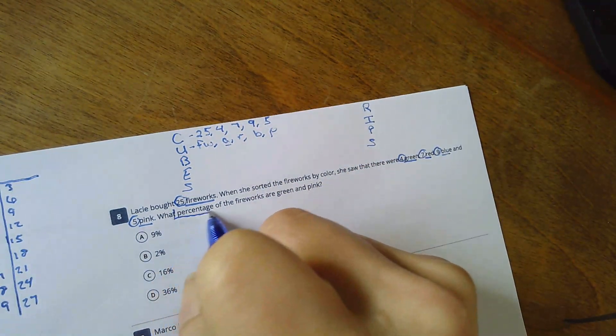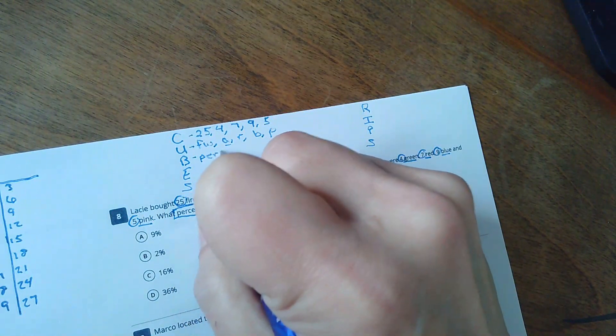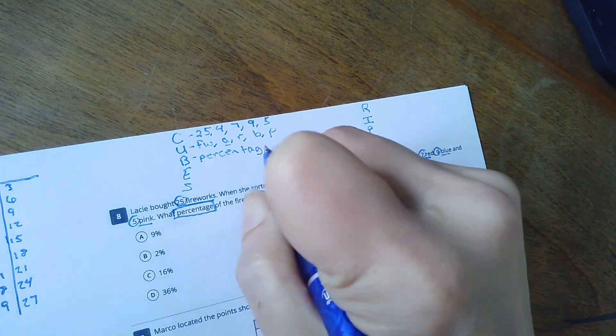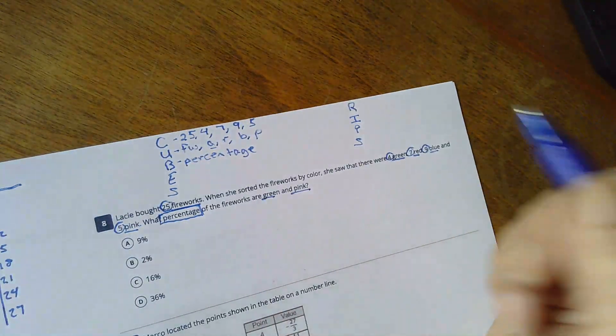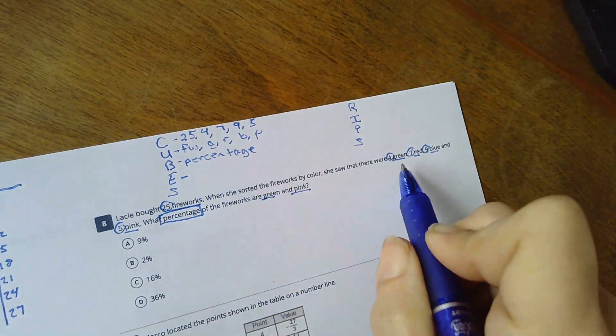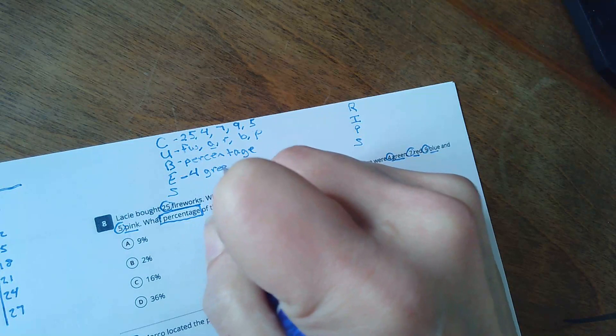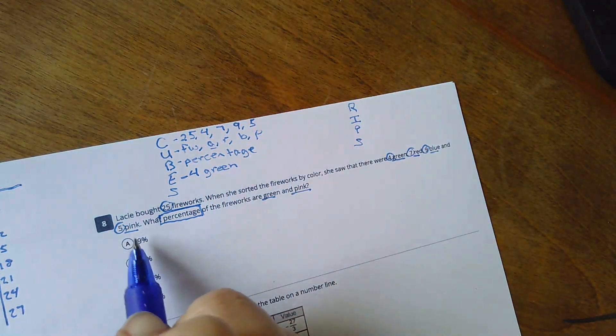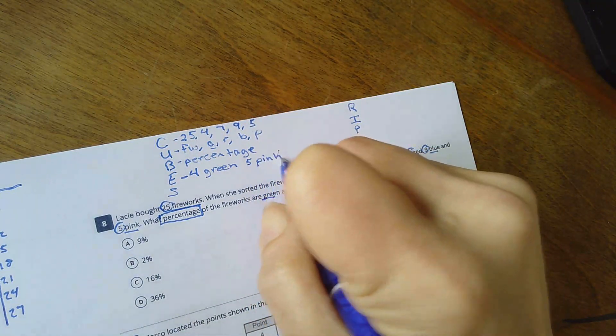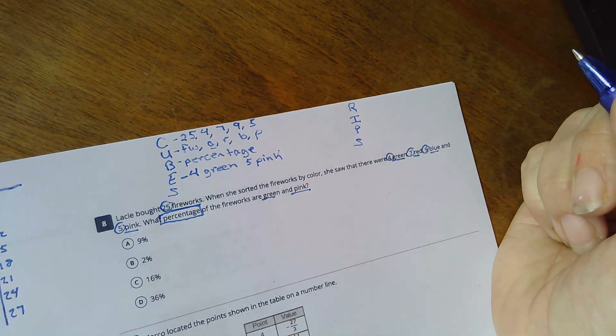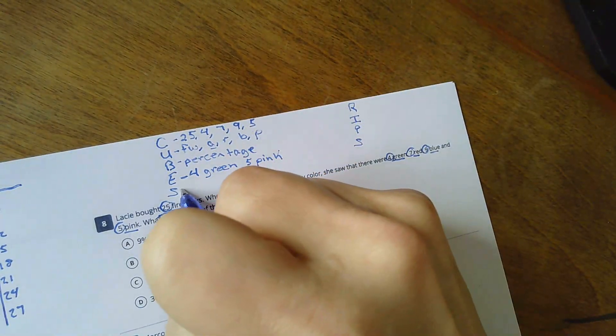Percentage. And this is when I'm going to evaluate. I need green and pink. Okay. So green is four. And pink is five.